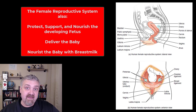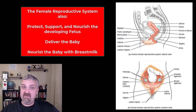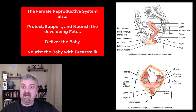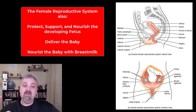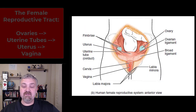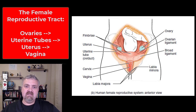On top of that, the female system also has to support the developing fetus, deliver it to the outside world, and feed it. So there's going to be a lot more going on here. Structurally, though, the female reproductive tract is actually less complicated than the male tract.